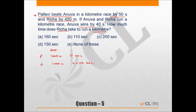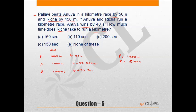Pallavi beats Risha by 450 meters means when Pallavi has done 1000 meters, Risha has done only 550 meters. Since Anuva completes the race in T + 50 seconds, and Anuva beats Risha by 40 seconds, Risha will complete the 1000-meter race in T + 90 seconds.